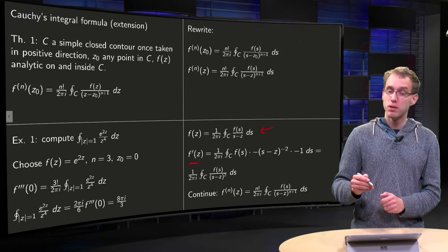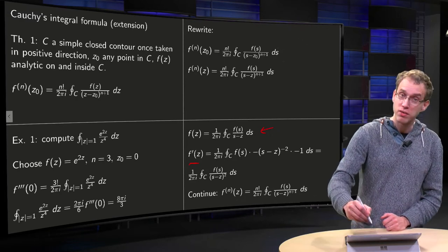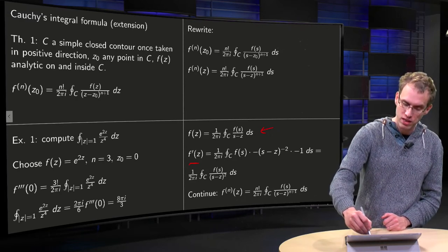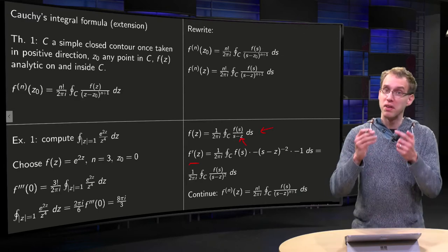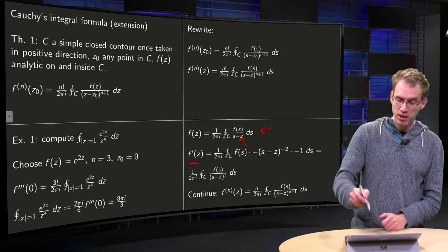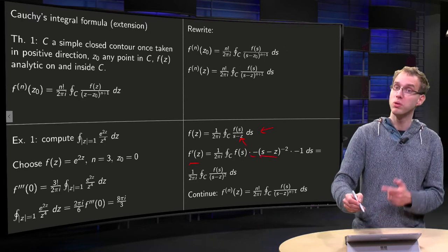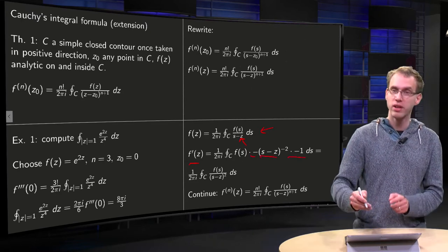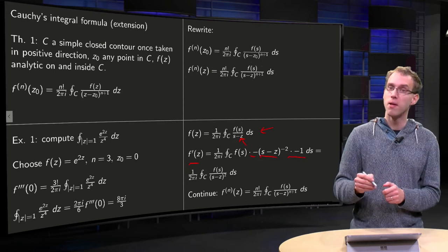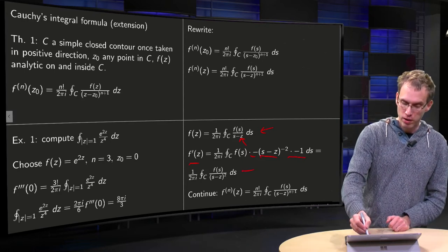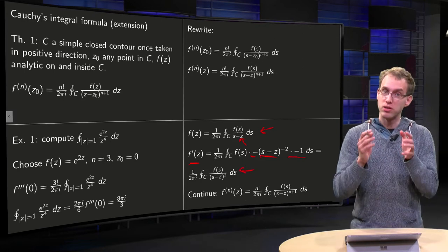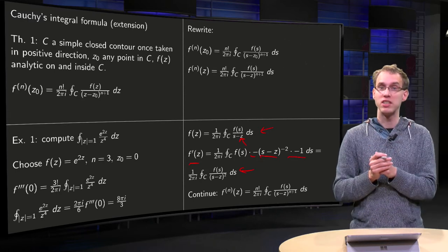you get f prime. The only spot where the z is, you are differentiating with respect to z, the only spot where z is is over here. So you have (s-z) to the power minus 1. If you differentiate that, you get minus (s-z) to the power minus 2 times chain factor minus 1, which cancels the other minus sign, so you get 1 over 2πi, and then integral f(s) divided by (s-z) squared,